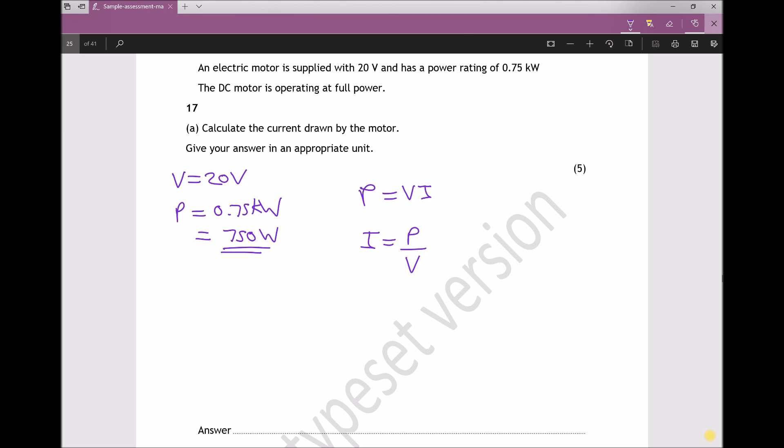Providing we input P in SI units of watts and the voltage in SI units of volts, then we'll get an answer in SI units of amps. So here we have 750 for the power divided by 20, which gives us 37.5. I know that the units there are amps because I've used SI units for both my power and my voltage.